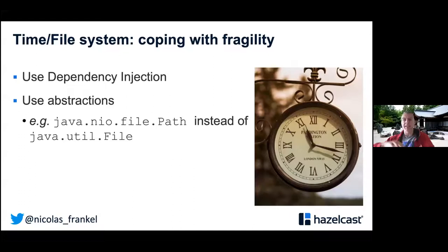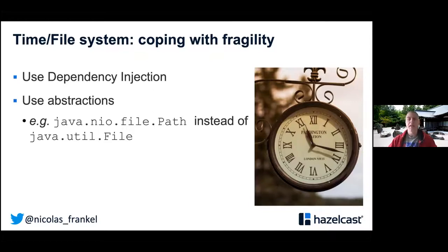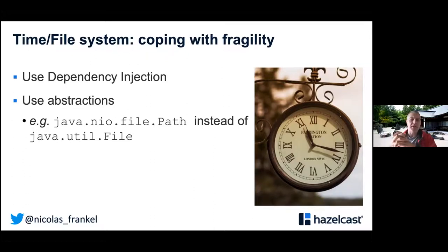Let's look at how to cope with this fragility. First: time and the file system. For time — I once had to create a batch that had to run every Monday, and I designed it so I couldn't test it because I created the clock inside the class itself. The fix: don't do that. Use dependency injection to inject the clock, then it becomes testable. Likewise, don't use the old File API — use Path, because Path is an abstraction whereas File is a real item tied to the JDK.